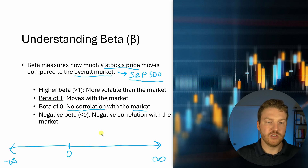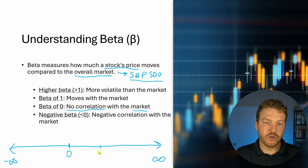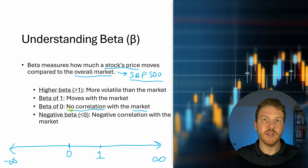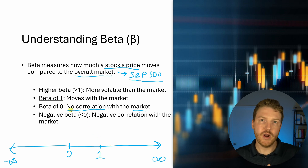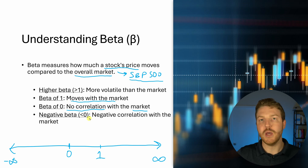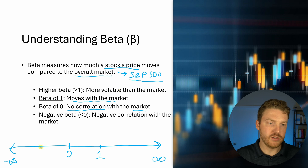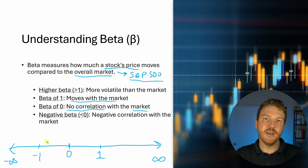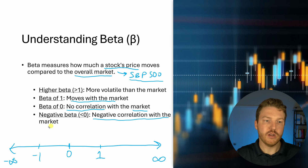Whereas a stock that has a beta of one, when the market moves we would expect the stock to move roughly in the same direction and in the same proportion. Now a stock that has a negative beta lower than one — let's use negative one as an example — will have a negative correlation with the market.